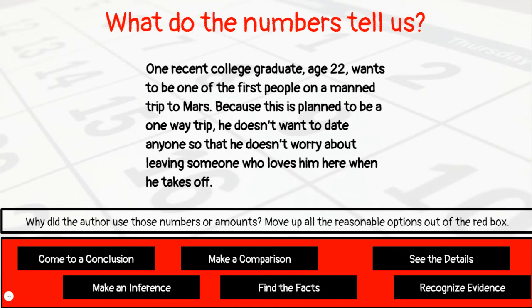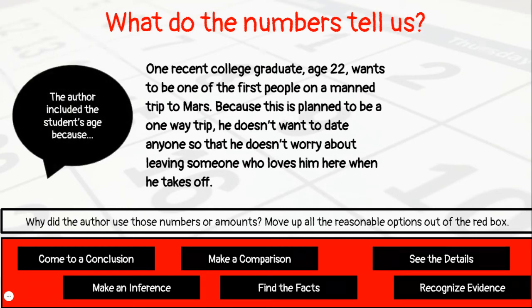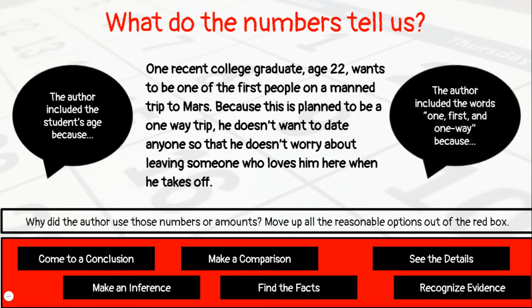Now that we have highlighted the numbers, consider this question: why did the author use those numbers or amounts? Here are a few good thinking ideas to consider. One sentence starter that might help you: 'The author included the student's age because...' Another one: 'The author included the word one, first, and one-way because...' Pause the video and decide what the author was trying to show us with these numbers by dragging the black boxes out and placing them by the text.